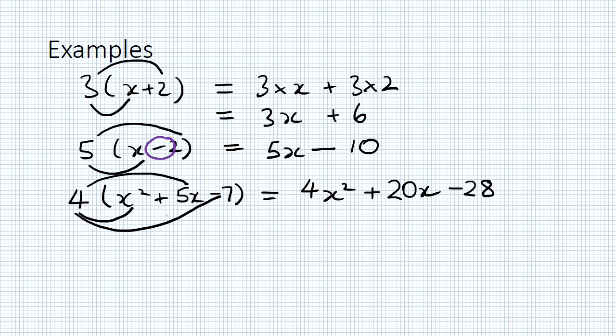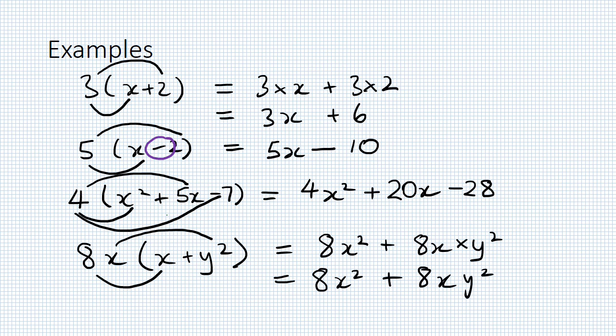One last one. This time we've got an x in the term outside the brackets: 8x(x + y²). Multiply those two together, multiply those two terms together. 8x multiplied by x is 8x², 8x multiplied by y² gives us 8x² + 8xy².